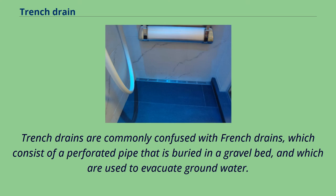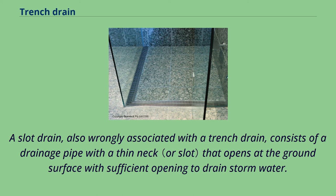Trench drains are commonly confused with French drains, which consist of a perforated pipe that is buried in a gravel bed and which are used to evacuate groundwater. A slot drain, also wrongly associated with a trench drain, consists of a drainage pipe with a thin neck that opens at the ground surface with sufficient opening to drain stormwater.